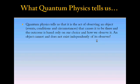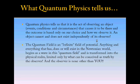So what quantum physics basically tells us is it's the act of observing an object—that is, your events, conditions, and circumstances—that causes it to be there. And the outcome is based on your choice and how you observe it. An object cannot and does not exist independently of its observer. So the quantum field is an infinite field of potential. Anything and everything that has, does, or will exist in the Newtonian world begins as a wave in this quantum field and is transformed into the physical realm, limited only by what can be conceived as truth by the observer. And the observer is none other than you. So there goes the biblical saying: as you believe, so shall you see.